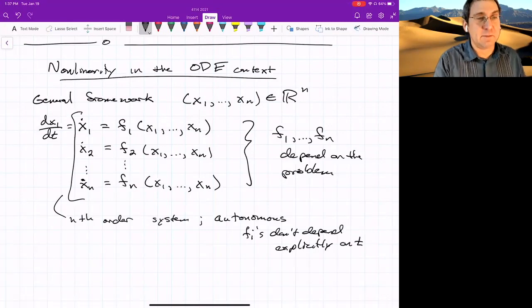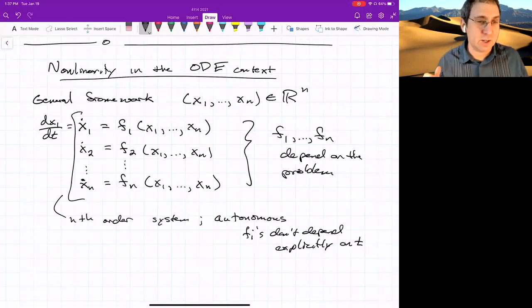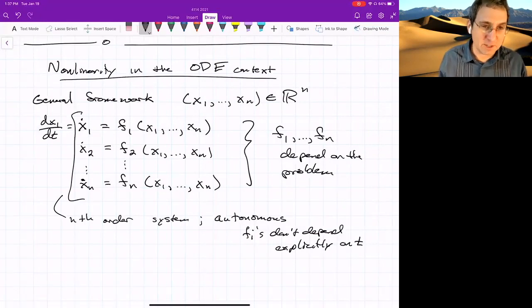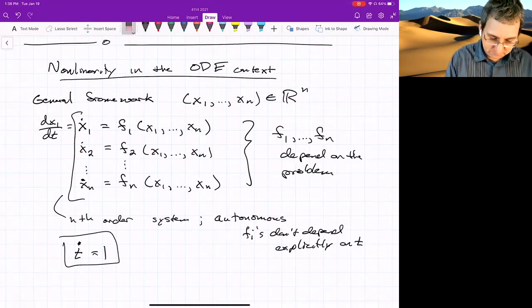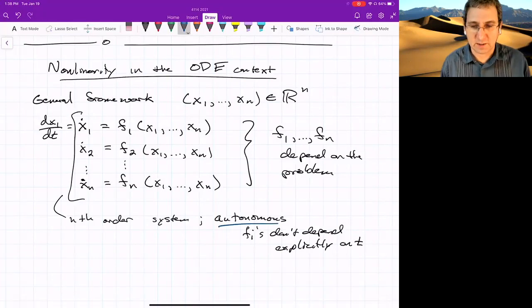Even if we did have the f's that did depend on time, you could turn it into an autonomous system by just adding on a t, how does t evolve in time? And dt by dt or t dot equals one. So we could add that on if we wanted to, but we're mostly going to stick with this autonomous setting.